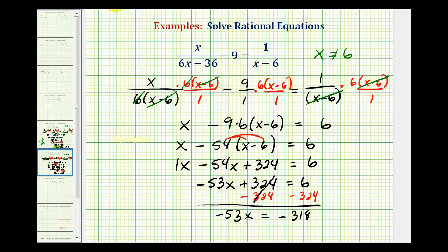And now we'll divide both sides by negative 53. So this simplifies to x. And then negative 318 divided by negative 53 is equal to positive six.